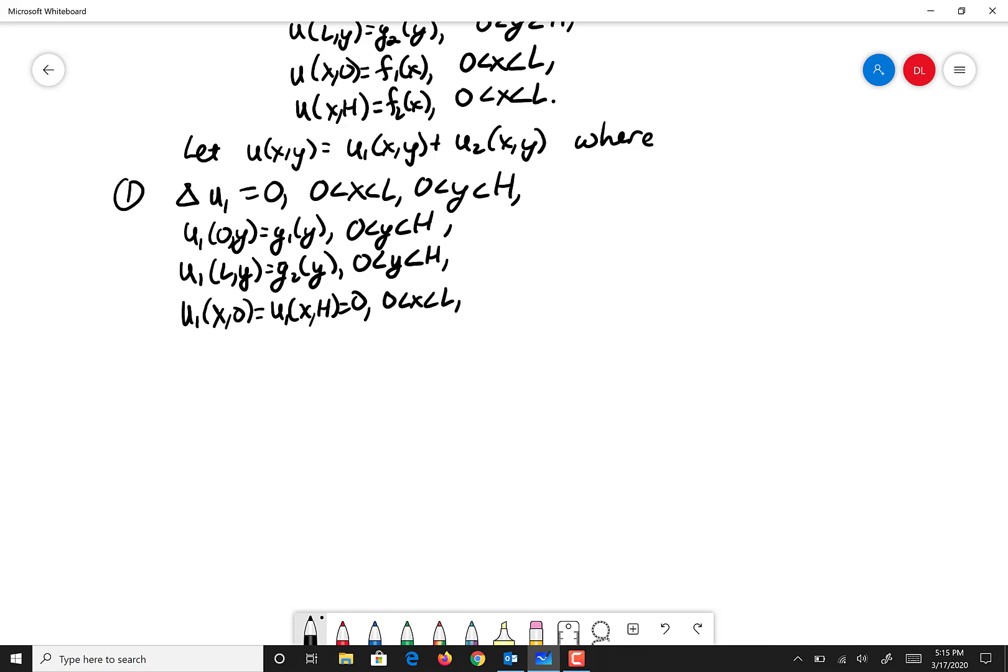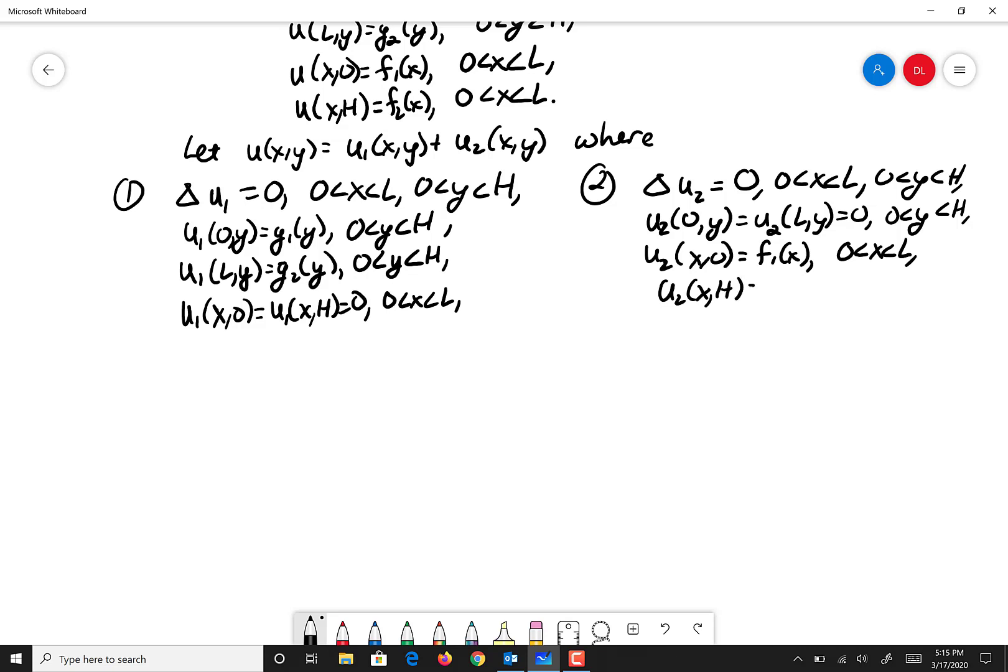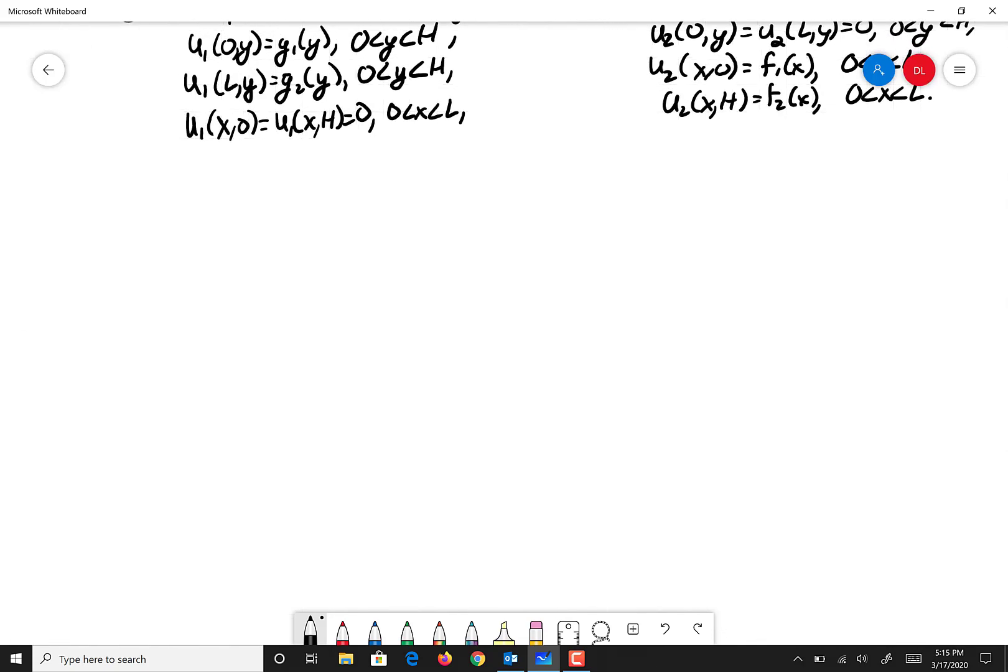And u sub 2, for u sub 2 we had the homogeneous conditions on the x boundary, and then the non-homogeneous on the y boundary. Something like this, and so we're going to solve those separately using separation of variables, and then sum the result. So we already showed that the sum satisfies the original problem, and all the boundary conditions are applied, so we take the two problems and solve them independently.